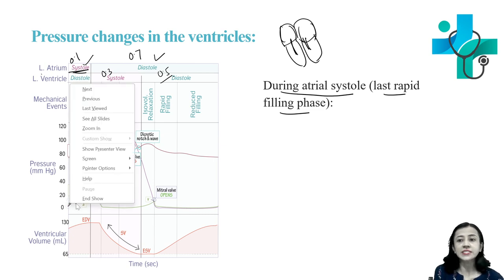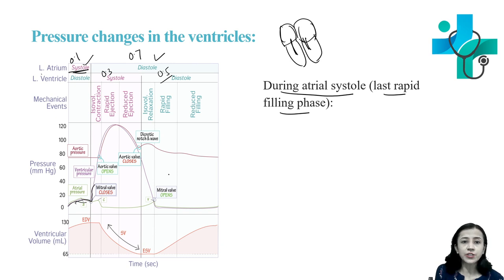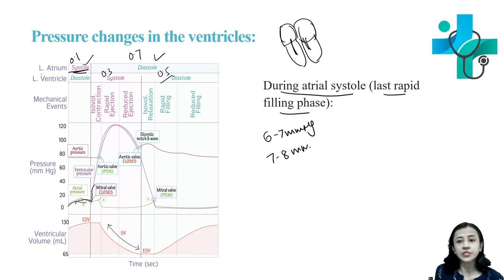During atrial systole, there is an increase in the intraventricular pressure. Right intraventricular pressure increases to 6 to 7 mmHg, and left intraventricular pressure is about 7 to 8 mmHg. You can see this on the curve.